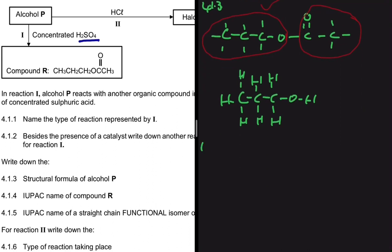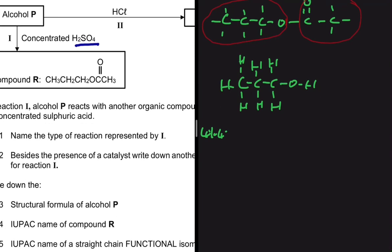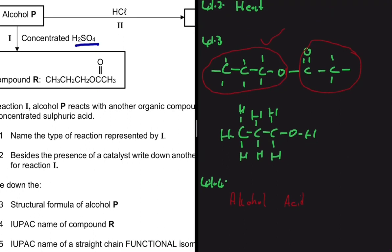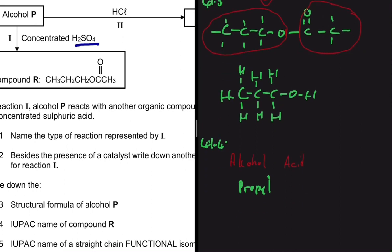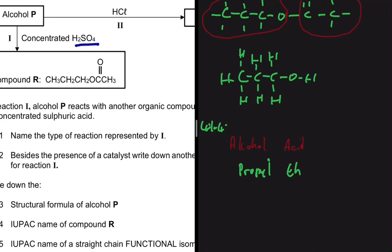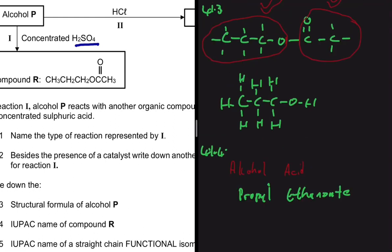Moving to 4.1.4: let's write the IUPAC name of compound R. Compound R is an ester. The first part of the name comes from the alcohol and the second from the acid. The alcohol used is propanol, so the name starts with propyl. The acid used is ethanoic acid, so the name is propyl ethanoate. For example, if butanol were used instead, the name would be butyl ethanoate; if propanoic acid were used, it would be propyl propanoate. That's how we name esters.